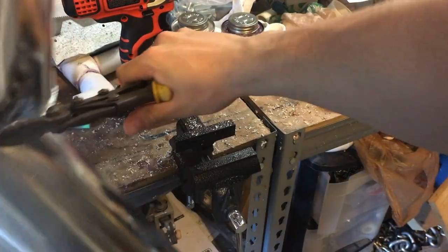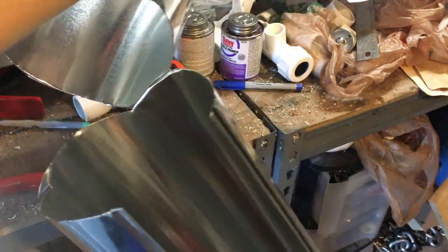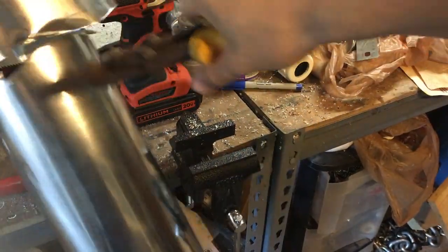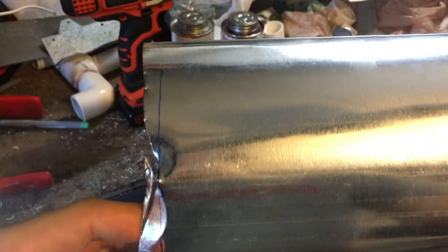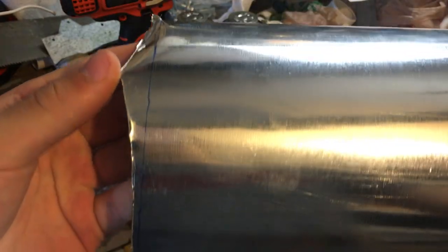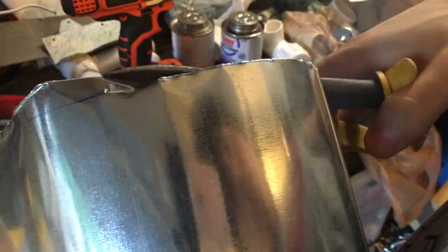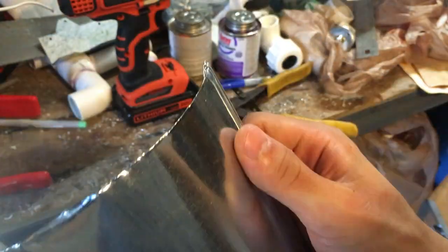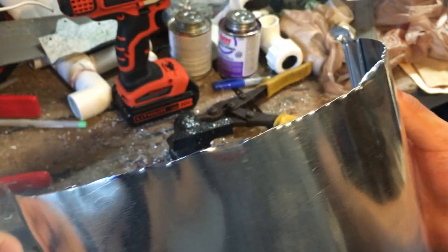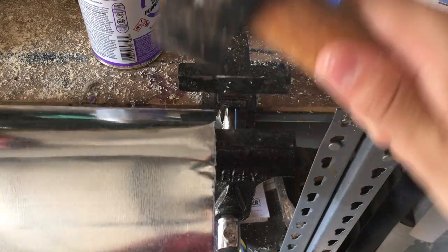I did one really dirty cut just to sort of isolate the section that I was working with. Once I was done with that, I had a really jagged edge, so I cleaned it up a little bit and then further cleaned it up by taking a hammer to it and straightening out the line.